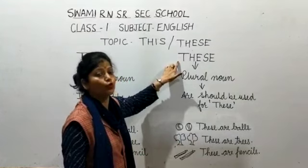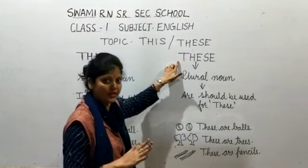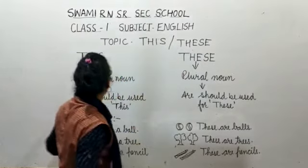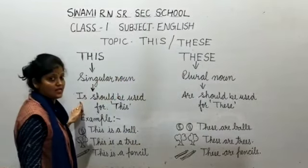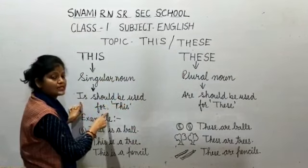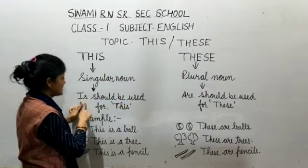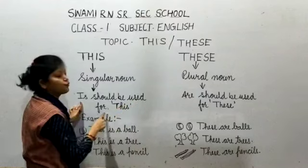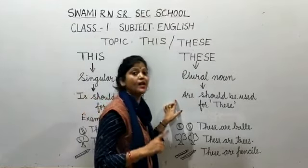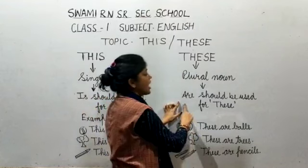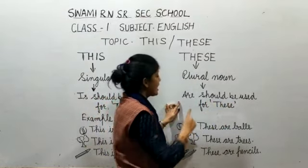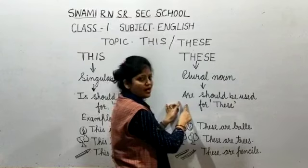'These' is always used for more than one object, person, place, and thing. 'Is' — I-S — should be used with 'this'. And 'are' — A-R-E — should be used with 'these'.